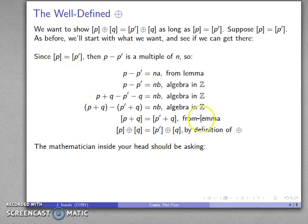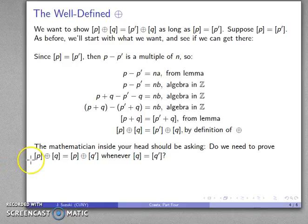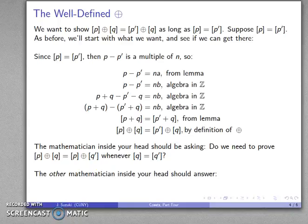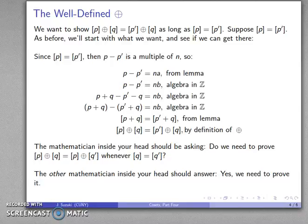And so here's our proof that we have an operation that is well-defined, except the mathematician inside your head should be asking, do we need to prove that this is true when I change the second term? And the other mathematician in your head should answer, yes, absolutely we need to prove it. Now, you might get the impression that mathematicians' heads are a little bit crowded with other mathematicians talking to them, and, well, that's true. Well, for me anyway. I don't always listen to the voices in my head, but if it's a mathematician asking, I will try to answer it.